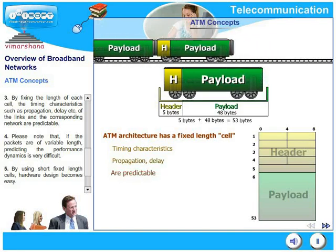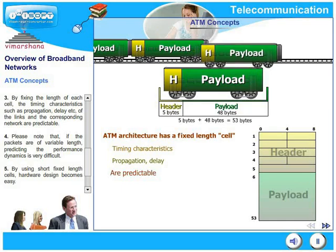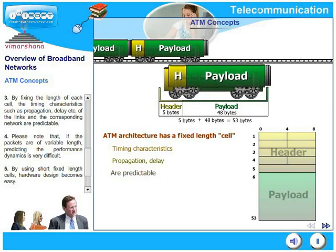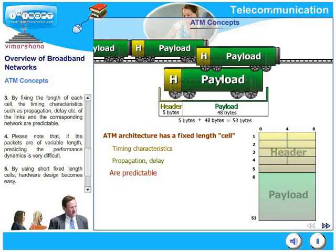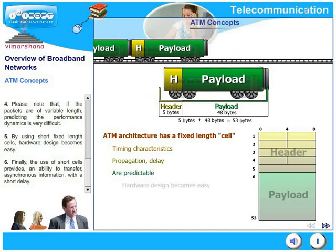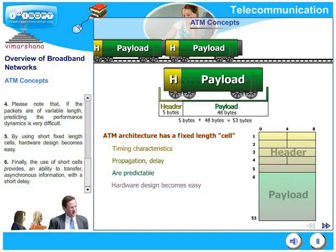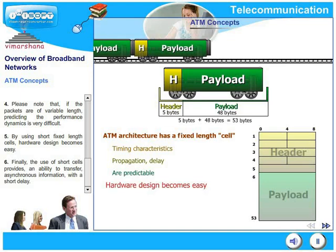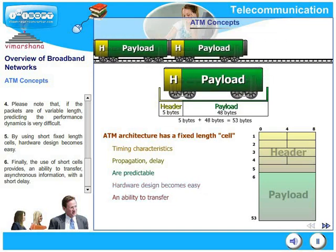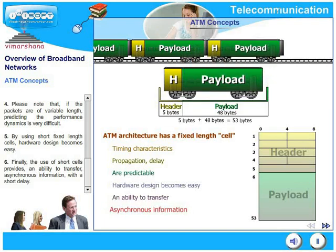Please note that if the packets are of variable length, predicting the performance dynamics is very difficult. By using a short fixed length cell, hard wire design also becomes quite easy. Finally, the use of short cells provides an ability to transfer asynchronous information with a very short delay.